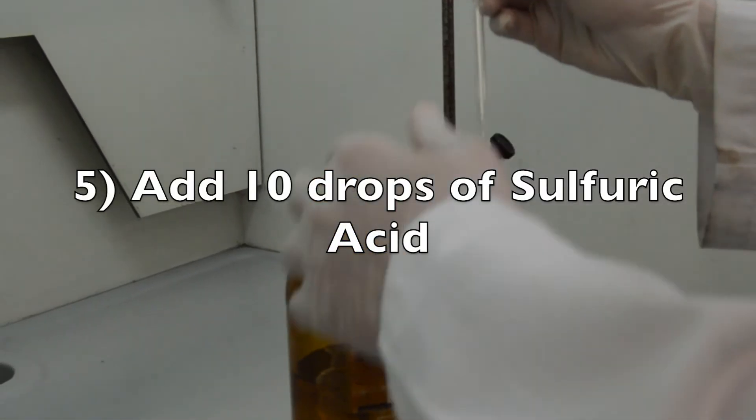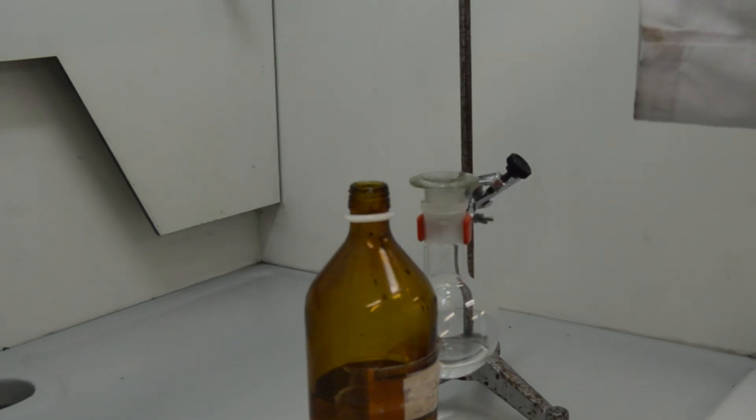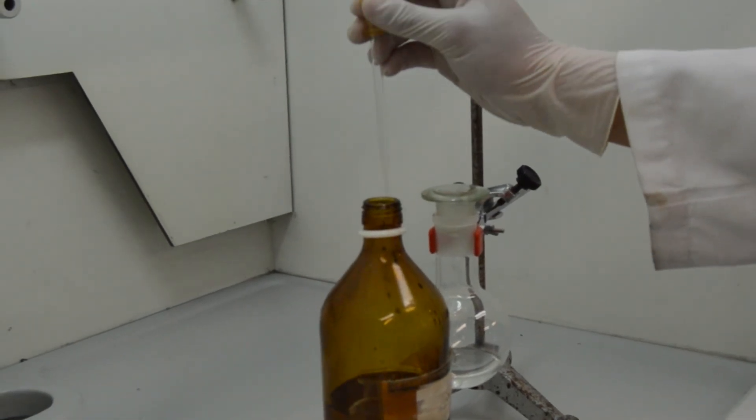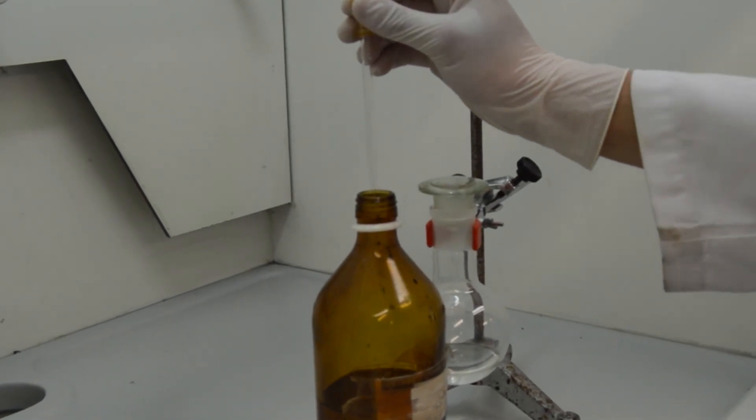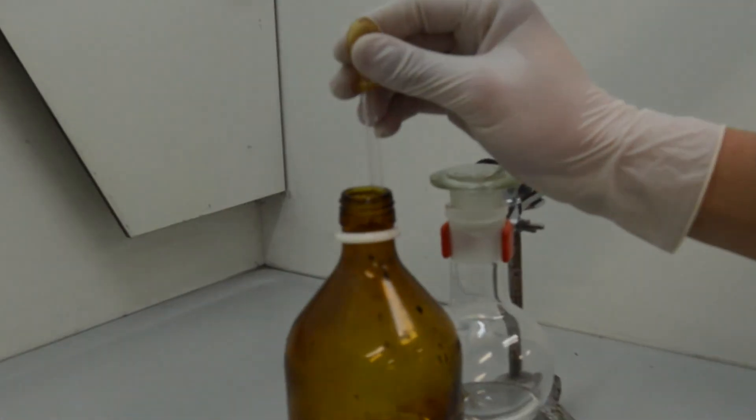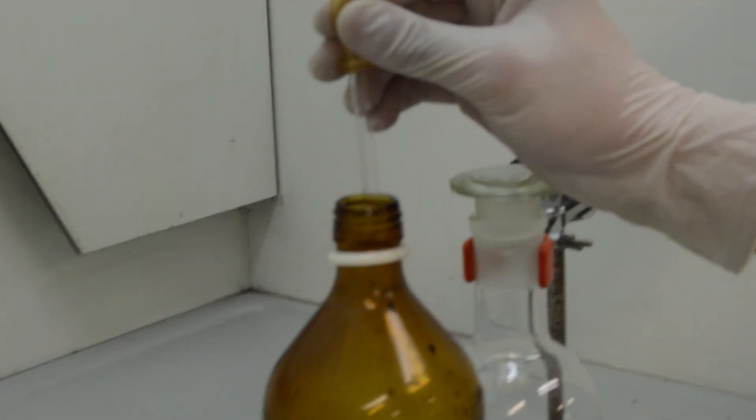In this esterification, we are going to use a catalyst in order to increase the reaction speed. We will do Fischer esterification, since it is the esterification of a carboxylic acid with an acid catalyst.